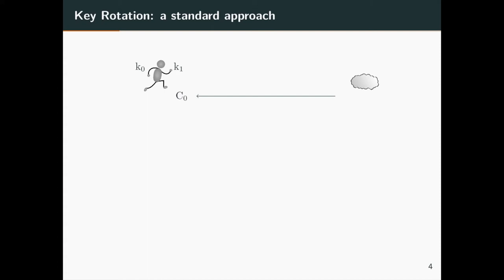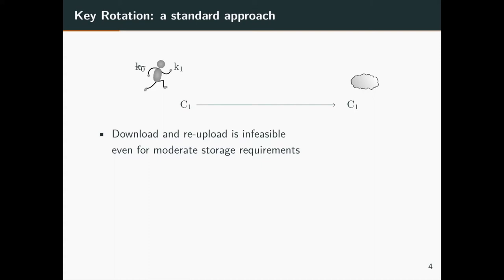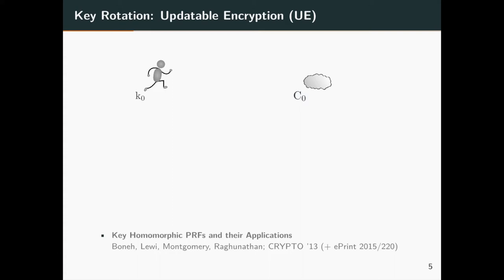A cloud user can do key rotation by downloading, decrypting, re-encrypting, and re-uploading — a very expensive approach. Updatable encryption provides a solution that allows the cloud to update ciphertext from an old key to a new key. The cloud user generates an update token and sends it to the cloud, and the cloud server uses this token to update the ciphertext.